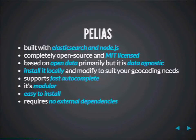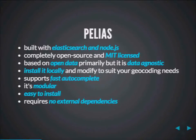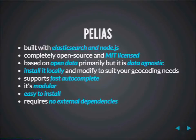That brings me to Pellius, the project I've been working on for over a year. It's built on Elasticsearch and Node.js, as the talk title suggests. It's completely open source. Currently Pellius is both a product and a service — a product in that you can set up your own geocoder based on your custom dataset, and a service if you want to use a geocoder for your app without setting one up yourself. It supports fast autocomplete, which comes essentially for free from Elasticsearch. It's highly modular, easy to install, and requires no external dependencies.